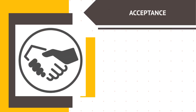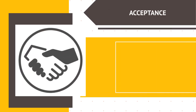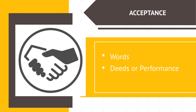Acceptance is when the offer was accepted unambiguously. Acceptance may be expressed through words, deeds, or performance as called for in the contract. Generally, the acceptance must mirror the terms of the offer. If not, the acceptance is viewed as a rejection and counteroffer.